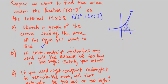Part B says if left endpoint rectangles are used, will the estimate be too low or too high? Justify your answer. So if I use left endpoint rectangles inside here, that means I'm going to touch the curve with the left end of the rectangle. Am I going to have an under or an overestimate?